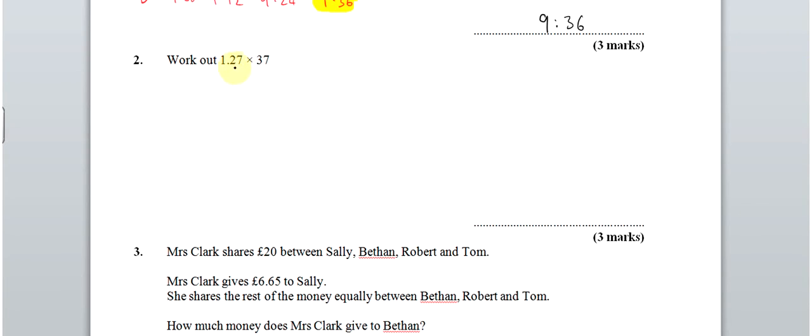Part 2. Work out 1.27 times 37. Just use whatever method you're familiar with. Most of you will have been taught the grid method. The safest way to do this is to ignore the decimal point to start with and then stick it back in later.